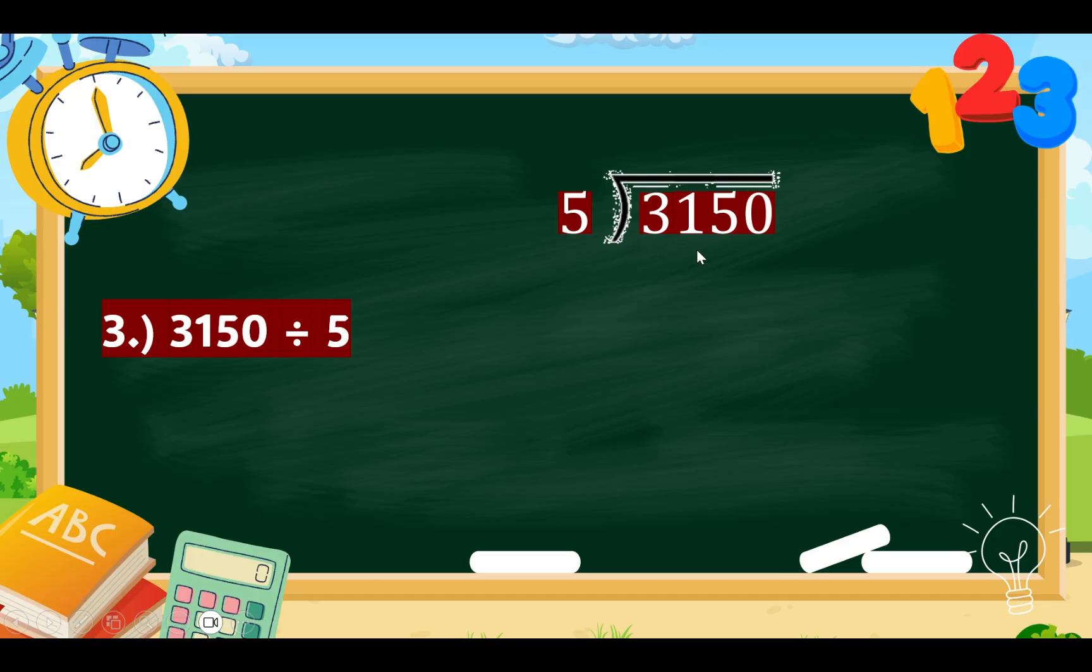So, 31 divided by 5 will have 6 and 6 times 5 equals 30. 31 minus 30 equals 1. Bring down 5. Now, our new number is 15. Then, repeat the process.